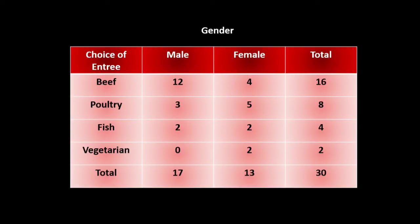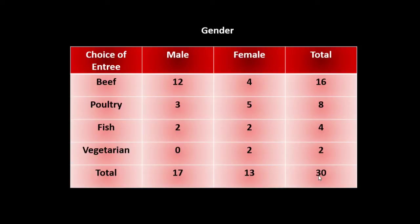Take a look at the row totals and the column totals. We can see that the total number of people who ordered a beef entree is 16 out of a grand total of 30. So 16 out of 30 people ordered a beef entree. We can also see that out of the 16 people who preferred beef, 12 of them were male and 4 of them were female. From the 30 people sampled, 17 were male and 13 were female.